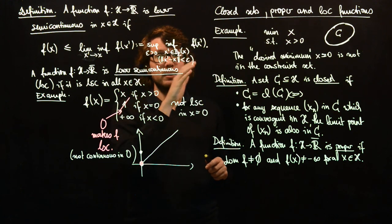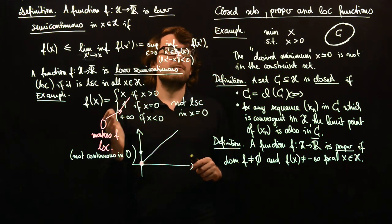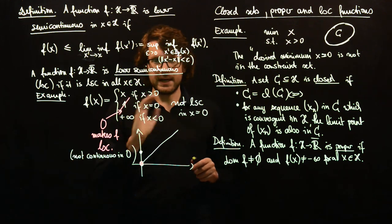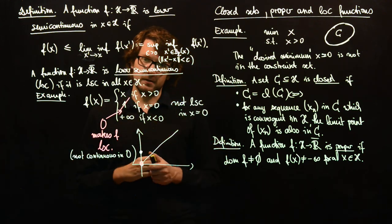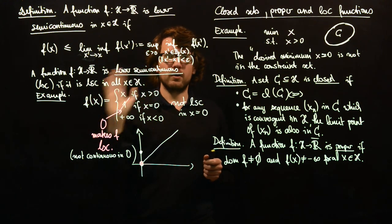Now we have basically all the technical assumptions for our objective functions. We require proper, closed, lower semi-continuous functions. And for constraint sets, if they are not related to the properties of the objective function, then usually we require non-empty, closed and convex sets.